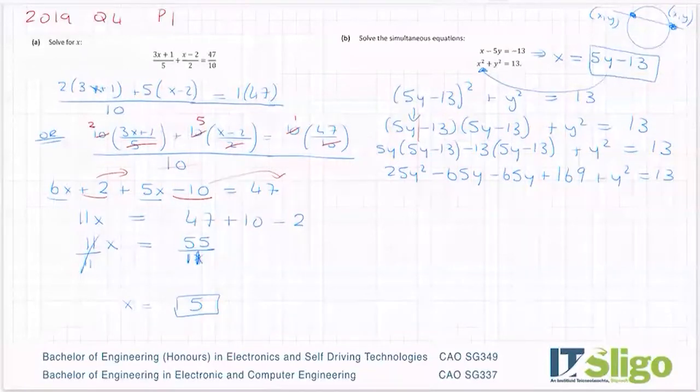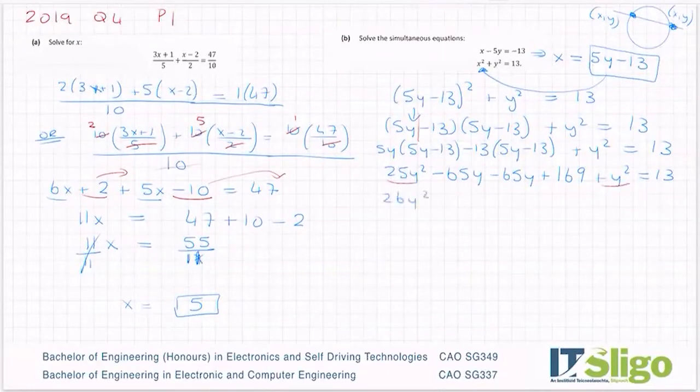So then we tidy up. My y² terms tidy together. So I'm going to get 26y² - 130y + 169 - 13, so that I have 169 - 13 being 156 = 0.